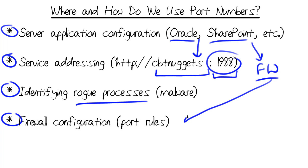And finally, to revisit the importance: firewall configuration often uses rules that denote both aspects of a socket. You might create allowances or traffic blocks based on IP addresses, port numbers, or both.